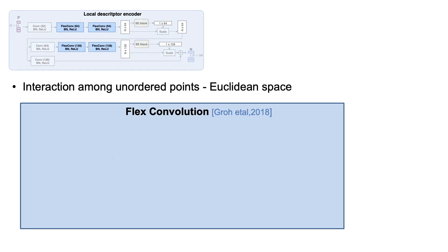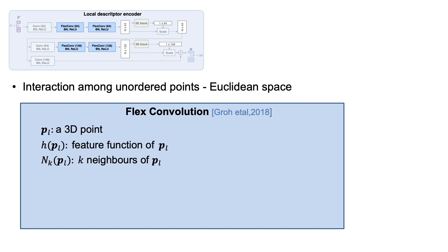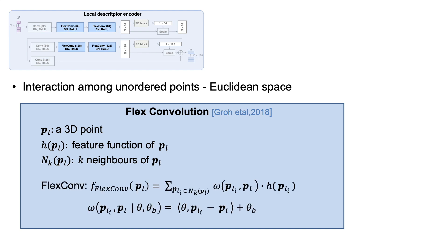Flex-convolution is employed to model the interaction among points in Euclidean space. Let's assume we have a 3D point and its carried feature function. We want to model the relations between the point and its neighbors. Flex-convolution is a generalization of the conventional convolution. The network learns the trainable parameters theta, and the contribution of each point depends on the dot product of theta and its relative distance to the center plus a learnable bias. Therefore, it can be considered as a linear approximation of the traditional filter kernel which uses the local information explicitly.